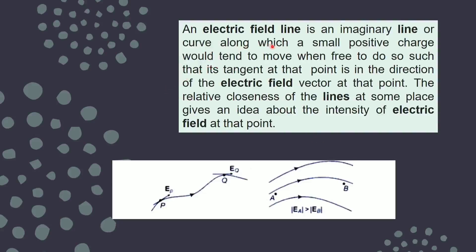Let us begin with electric field lines. We have already discussed electric field which is due to force — like in gravitational force, because of the gravitational force there is a gravitational field, similarly because of electrostatic force there is always an electric field around a charge. To represent the electric field we are taking the help of a line or a curve, which is an imaginary line, along which a unit positive charge would tend to move if free to do so.